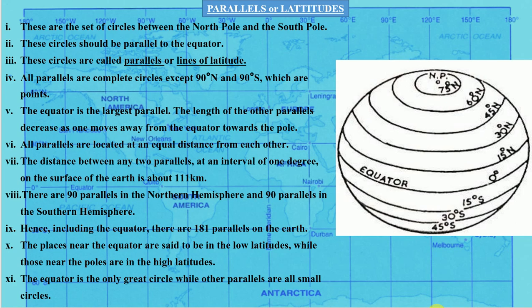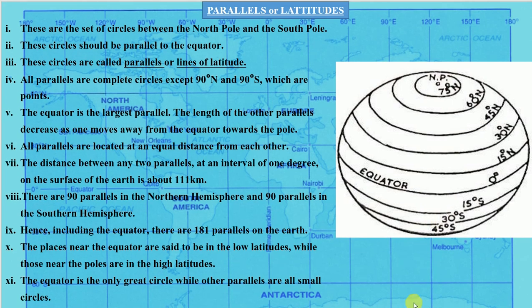The parallels near the equator are said to be in low latitudes, while the parallels near the North Pole and the South Pole are in the high latitudes. The equator is the only great circle, while the other parallels are all small circles.